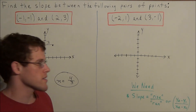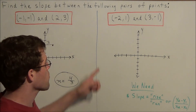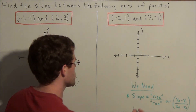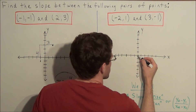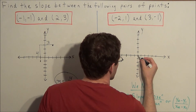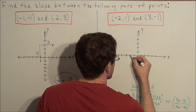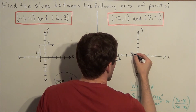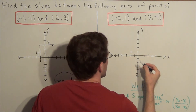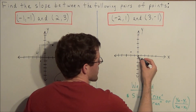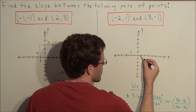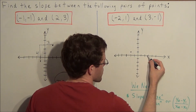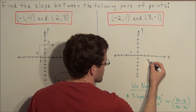Now we're going to use this concept again, except now we're finding the slope between a new pair of points. We're going to plot negative two, one — so we go to the left two and up one. Next we're going to plot the point three, negative one — so we go to the right three and down one.